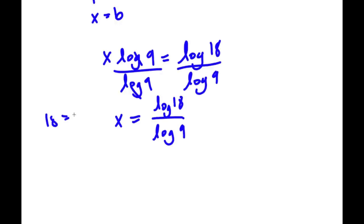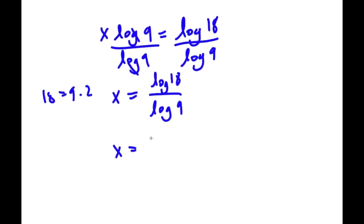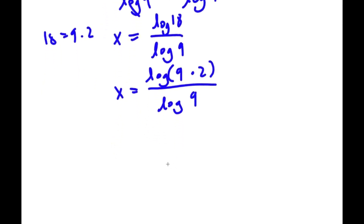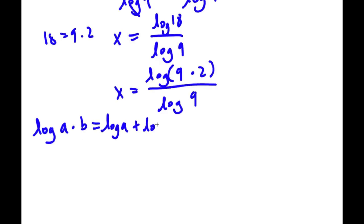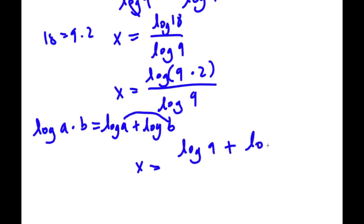Now 18 is equal to 9 times 2, so I'm going to rewrite log 18 as log 9 times 2, and now we divide this by log 9. If we have a logarithm in the form log a times b, this is actually equal to log a plus log b. So log 9 times 2 is going to equal log 9 plus log 2.